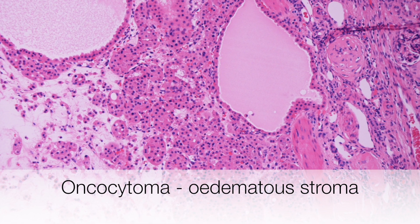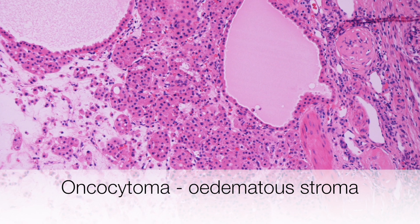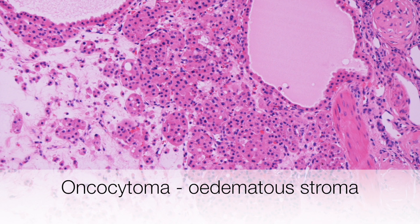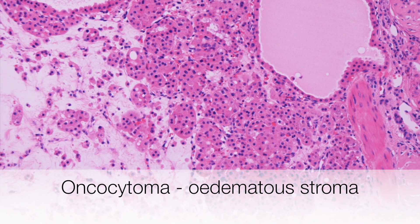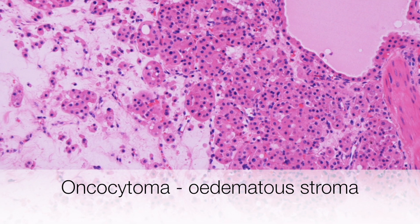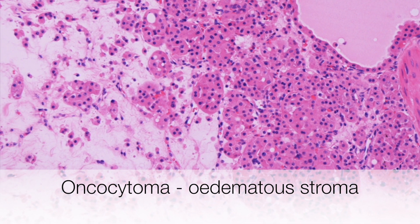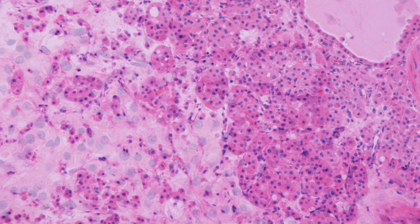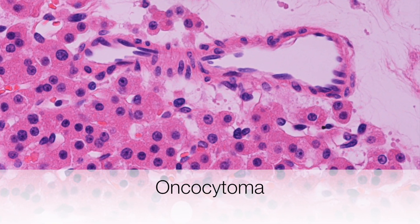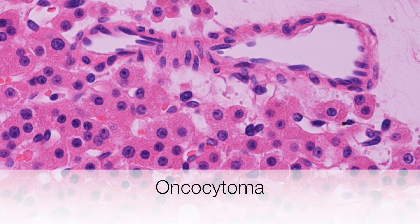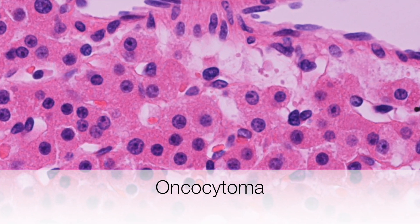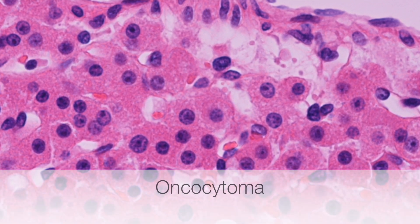This is the microscopic appearance of an oncocytoma. Here the tumour has a somewhat alveolar pattern and towards the left of the picture you can see there is a very oedematous stroma with only scanty numbers of oncocytoma cells lying in it. At higher power, the oncocytoma cells show round regular nuclei containing a single central nucleolus and abundant pink staining cytoplasm.